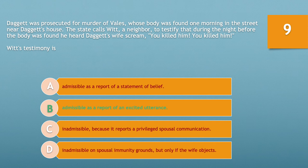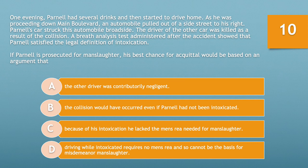Option D — inadmissible on spousal immunity grounds, but only if the wife objects — applies the same analysis. The person testifying is an individual outside the marriage, so spousal immunity grounds are irrelevant. Options C and D can be eliminated, as can A. As a result, B is the only viable answer: Witt's testimony is admissible as a report of an excited utterance.